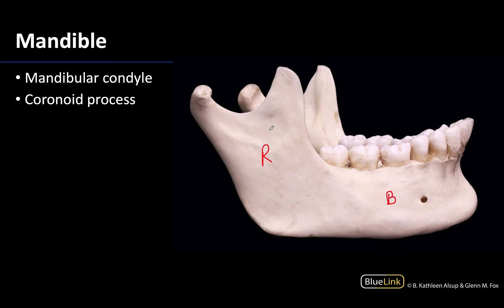The ramus is going to be the vertical part, the body will be the horizontal part, and this is really where you have those teeth that are articulating.